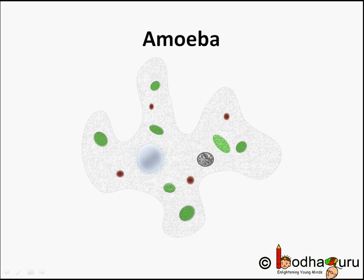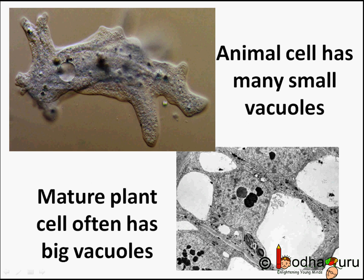Talking about the size of vacuoles — in animals, vacuoles are very small, but plant cells have very large vacuoles. In some plants, vacuoles occupy 50–90% of the space and are often the largest organelle in the cell.